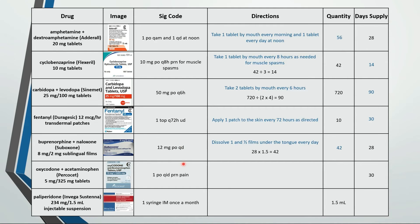This is take one tablet by mouth four times a day as needed for pain. A 30-day supply calls for 120 tablets. Last one is inject one syringe in the muscle once a month. One pen is 1.5 mL, so that's a one-month supply.